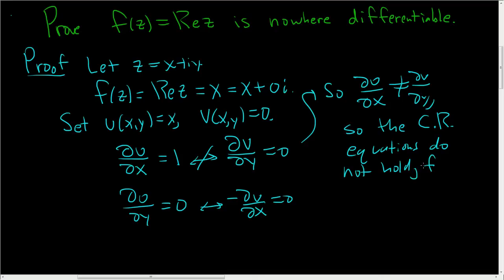f, so f is nowhere differentiable. So to prove a function is nowhere differentiable, one way to do it is to show that the Cauchy-Riemann equations do not hold.